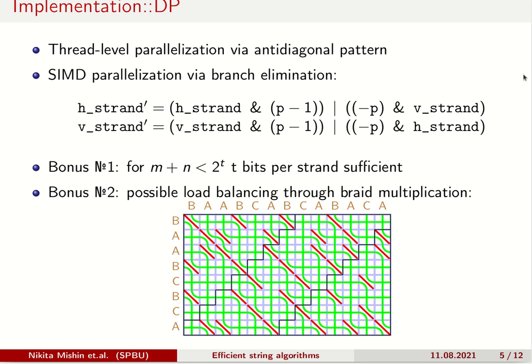Going further, given threshold on sum of m and n, we can store strands number in 64-bit machine words, which enhance SIMD parallelism. Last but not least, we can avoid the poor load balancing introduced by the anti-diagonal pattern by computing in parallel the first and third triangles. You can see them on the slide, here and here. Then we use sticky braid multiplication to obtain the final result.